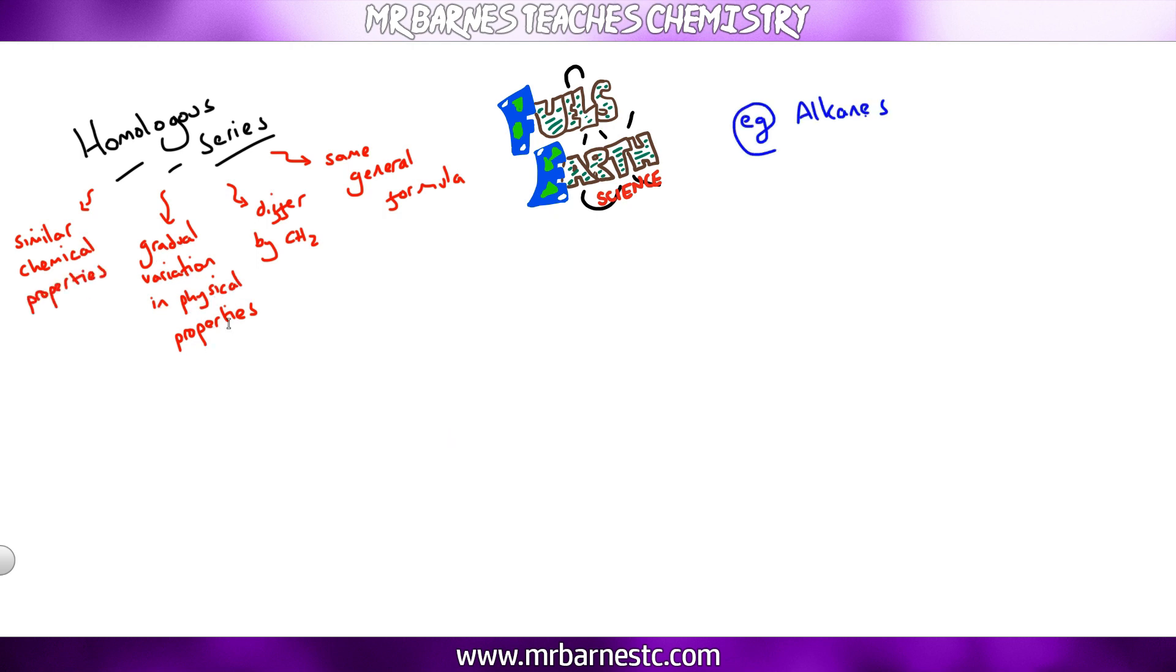If we use alkanes as an example then, alkanes have the general formula CnH2n+2. So what that means is that if you have one carbon, so n is 1, you have 2 times 1 plus 2 hydrogens. So that means I have the formula CH4. If I have 2 carbons, so n is 2, I have 2 times 2 plus 2 hydrogens, C2H6. And this applies for everything. So if I had 3 carbons it would be C3H8 and so on, as you can see from my formulas down here.